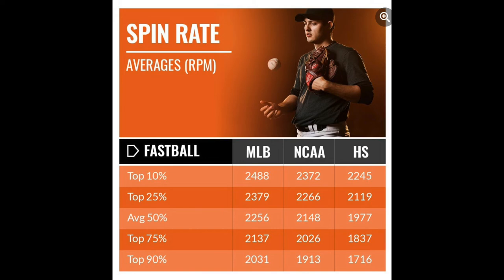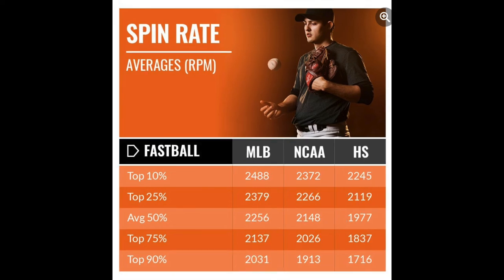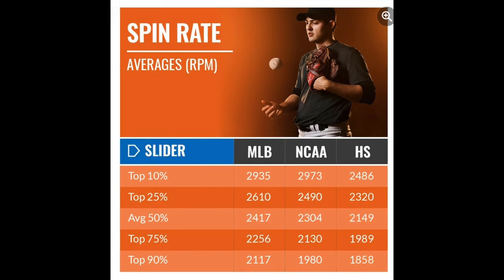Spin rates go down as you get younger and into youth baseball — a lot of that is just strength, velocity, and overall feel for the baseball. In comparison, if you look at the top 10% in MLB, those guys are spinning it at 2,935 RPM for a slider. That is significantly faster than the top 10% fastball in MLB at 2,488 RPM — nearly 500 RPM difference just from fastball to slider. When talking about delaying the break and making it break late and sharp, you use spin to do that, and the averages show exactly that.